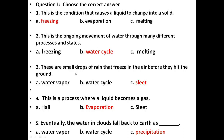Third: These are small drops of rain that freeze in the air before they hit the ground. Options are water vapor, water cycle, sleet. The answer is sleet. In this kind of precipitation, the water droplets freeze before falling onto the ground. The answer is sleet.